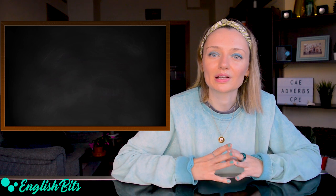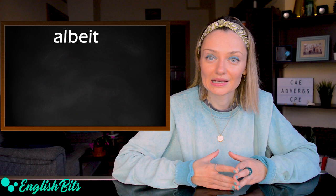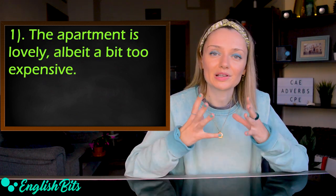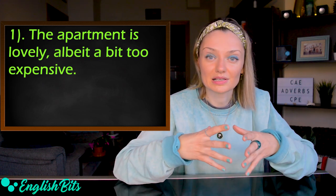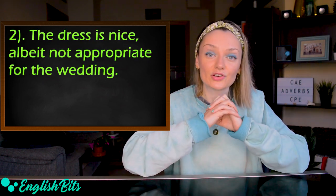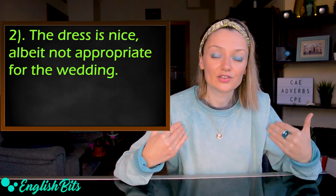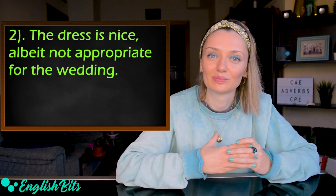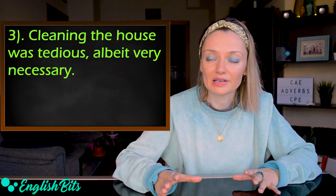Number eight is a C2 adverb: 'albeit,' which means although. Example one: 'The apartment is lovely, albeit a bit too expensive.' Example two: 'The dress is nice, albeit not appropriate for the wedding.' Example three: 'Cleaning the house was tedious, albeit very necessary.'